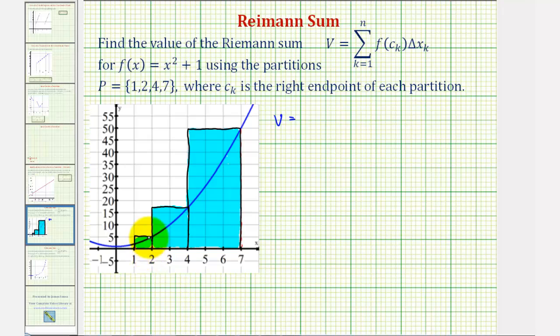Starting with this first rectangle, the height would be f(2), and then delta x, the width, would be one unit, plus the next height would be f(4) times delta x, the width of two units, and finally the third rectangle has a height of f(7) with a width, or delta x, of three units.